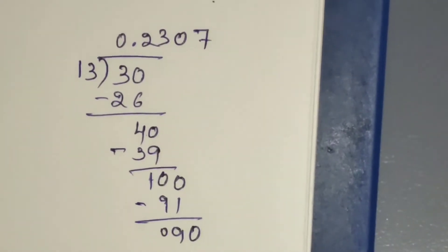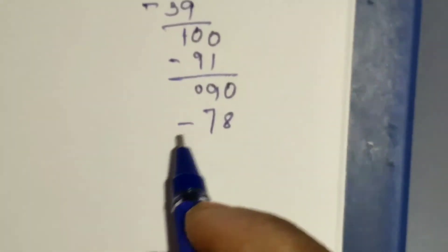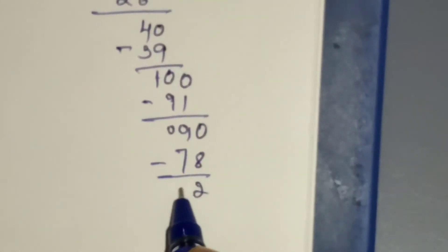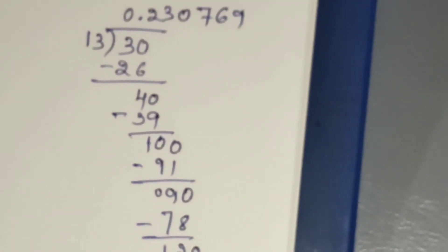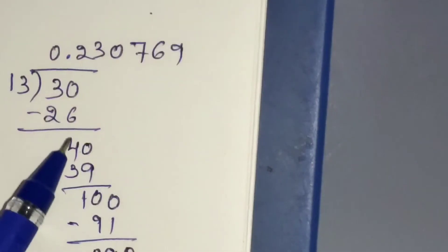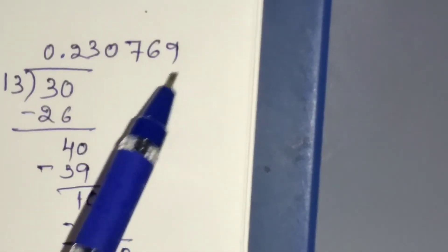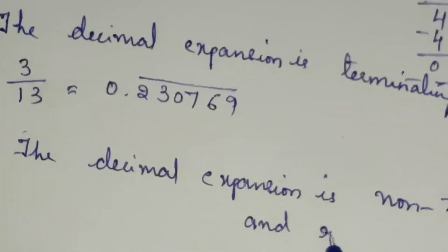Take 0 again — it will be 90. 13 sixes are 78; subtract to get 12. Take 0 — it will be 120. 13 nines are 117; subtract, and again you are left with 3. The same process will continue and these numbers will repeat again and again. The quotient is 0.230769 recurring. The decimal expansion is non-terminating and repeating.